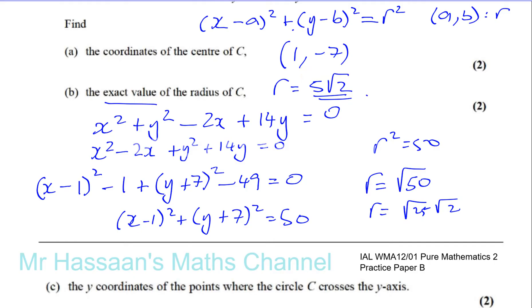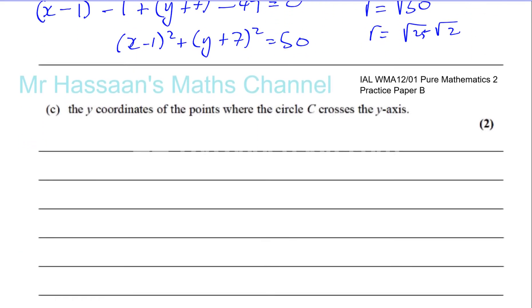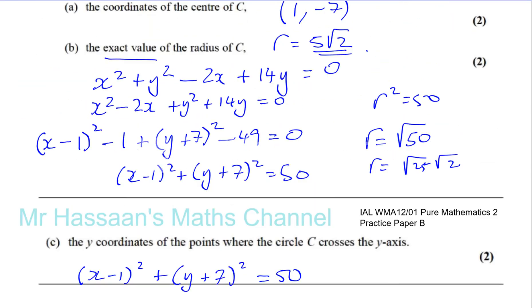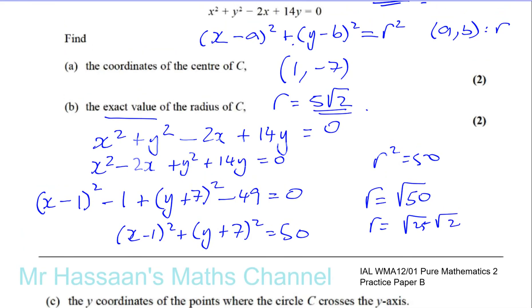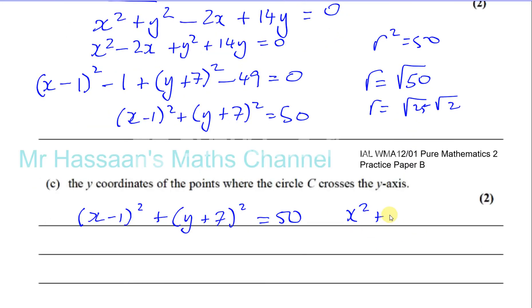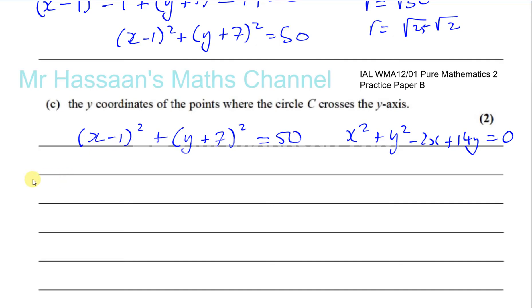So parts a and b are done in one step by completing the square. Now part c says: find the y-coordinates of the points where the circle crosses the y-axis. We know that on the y-axis, x equals 0. I'll substitute x equals 0 into the completed-square form: (x minus 1) squared plus (y plus 7) squared equals 50.